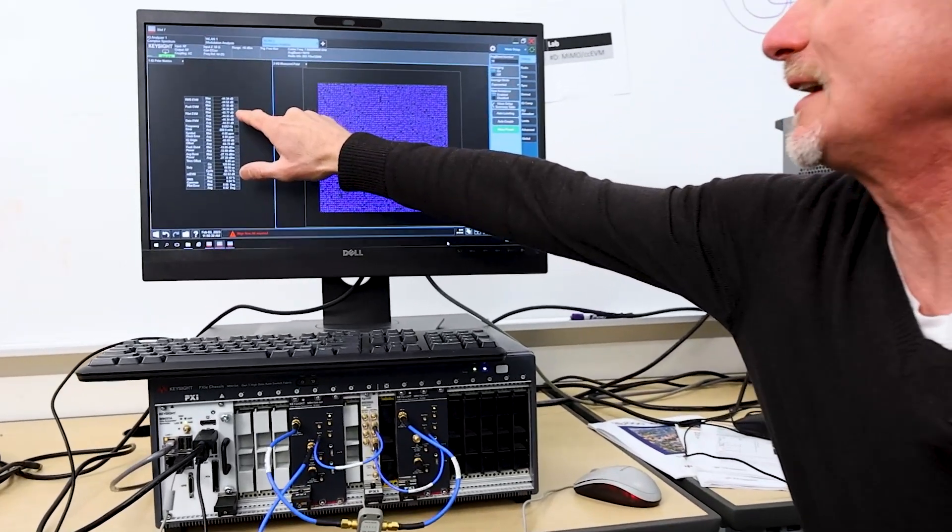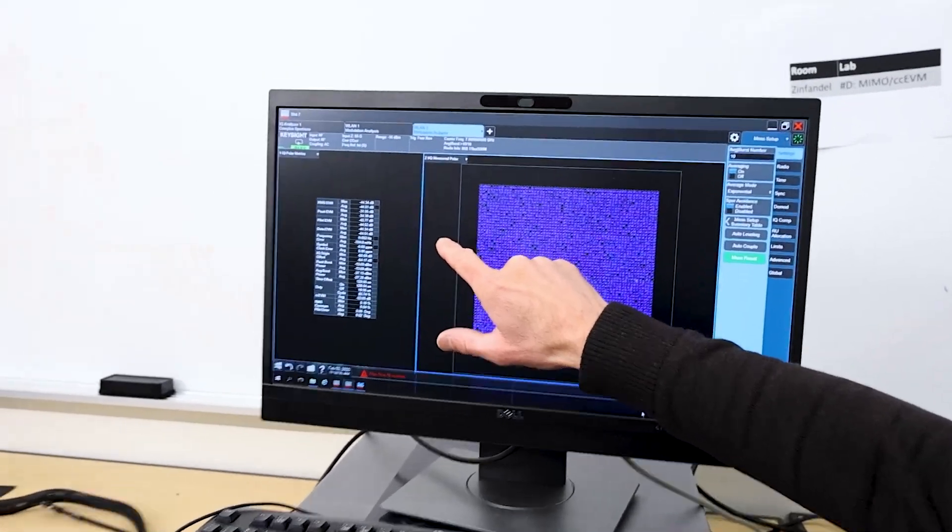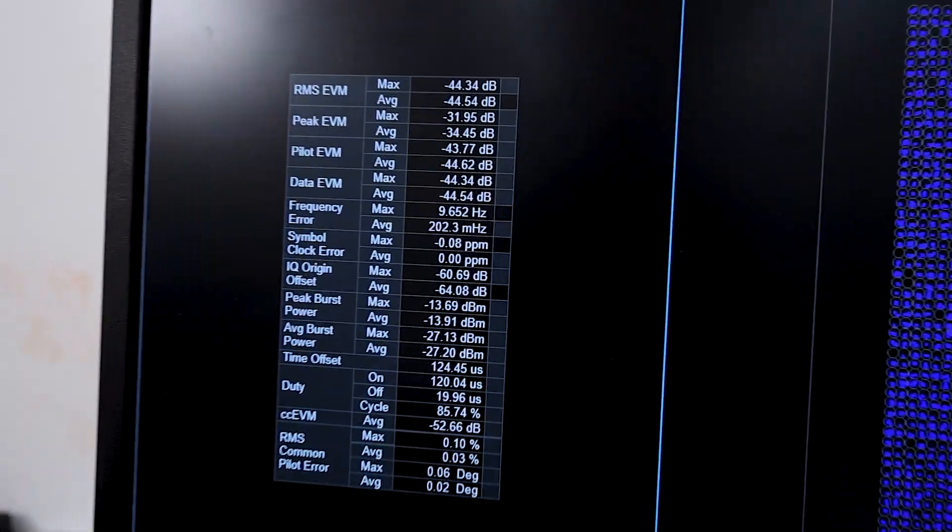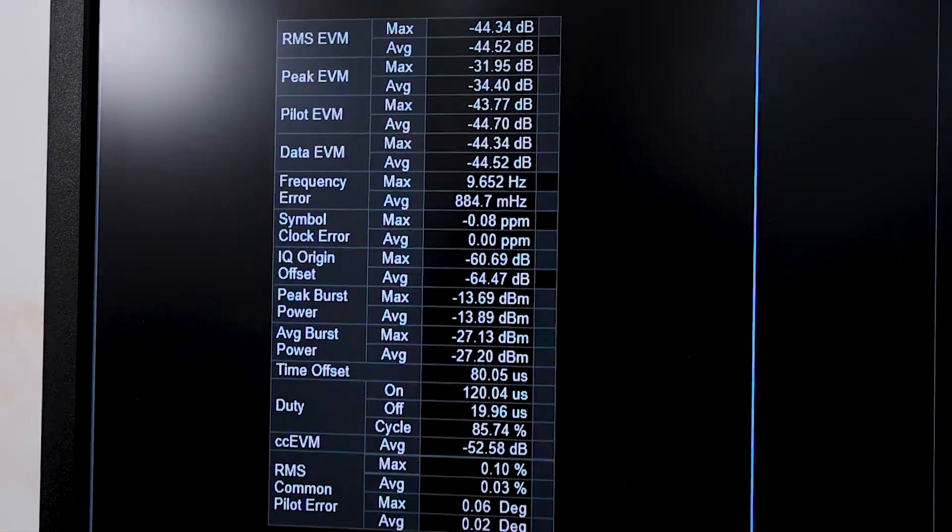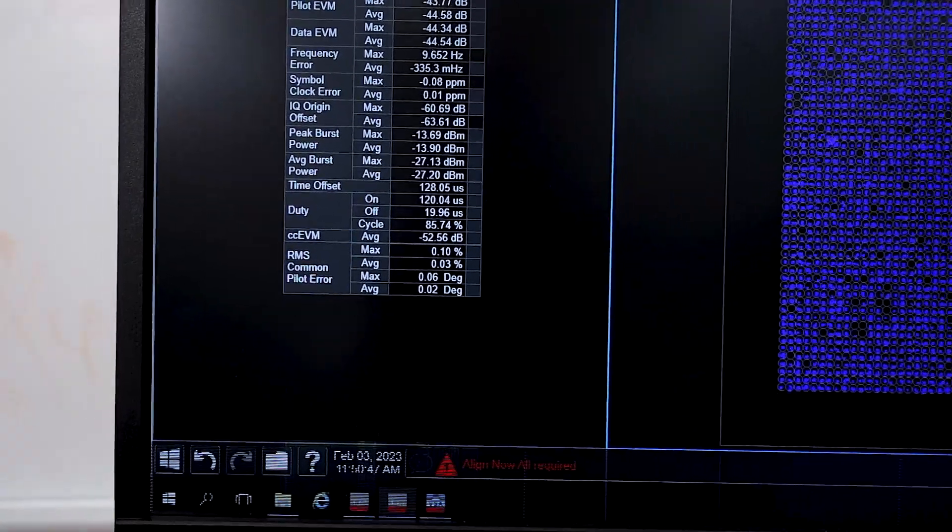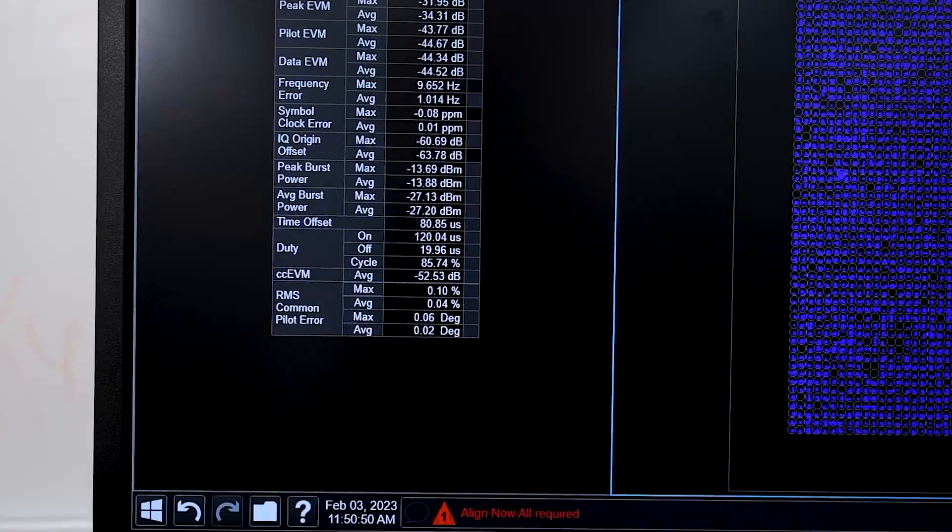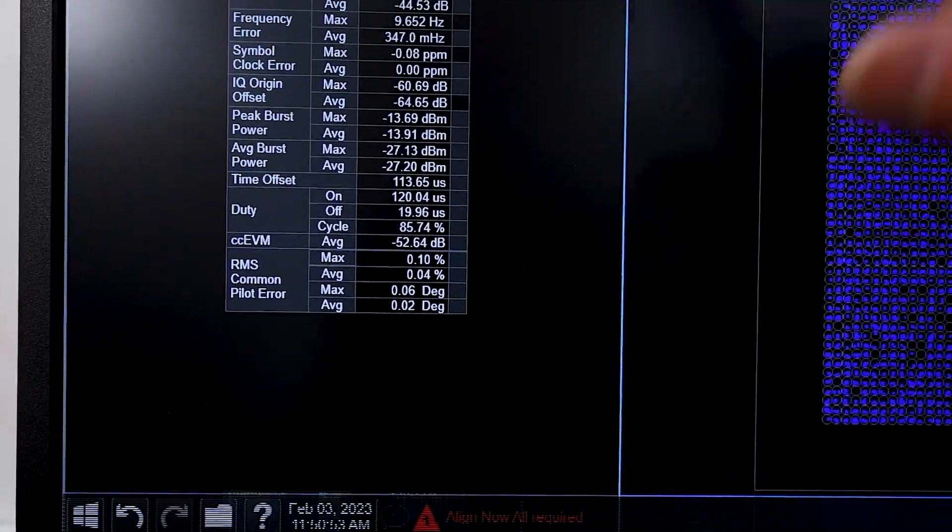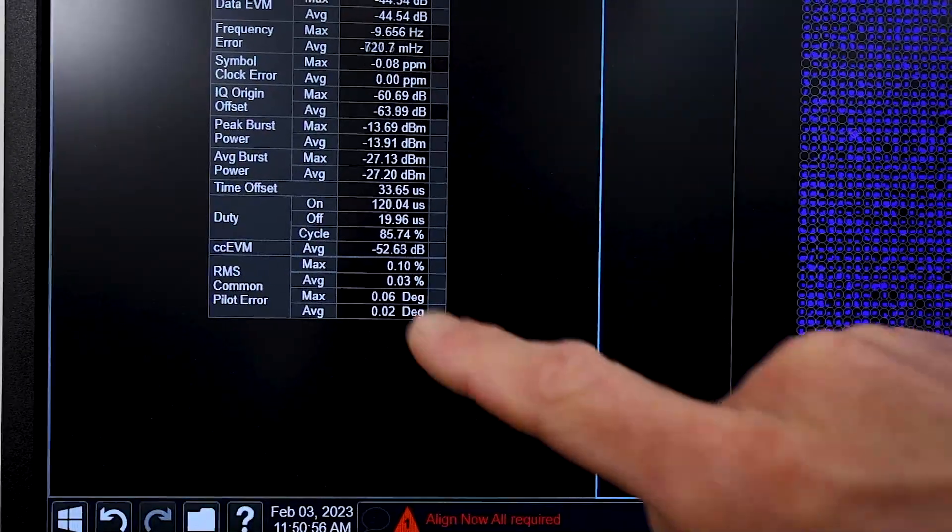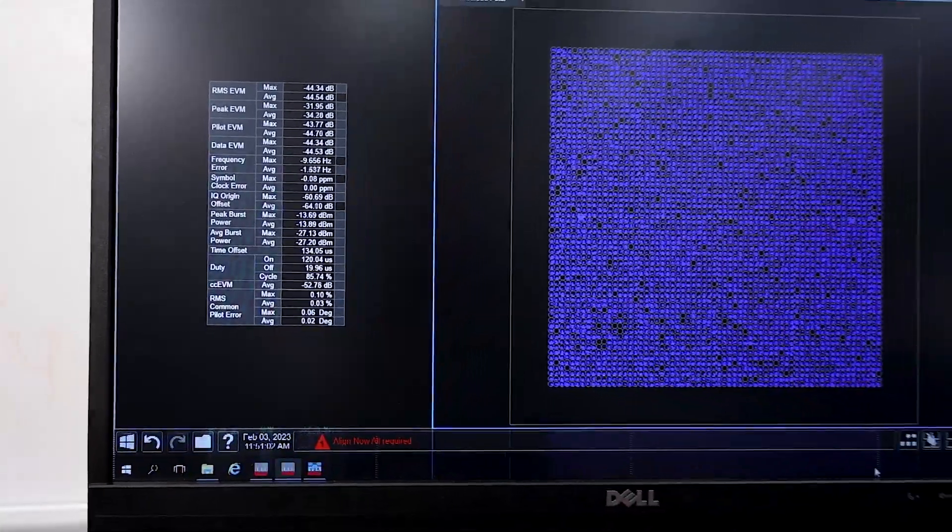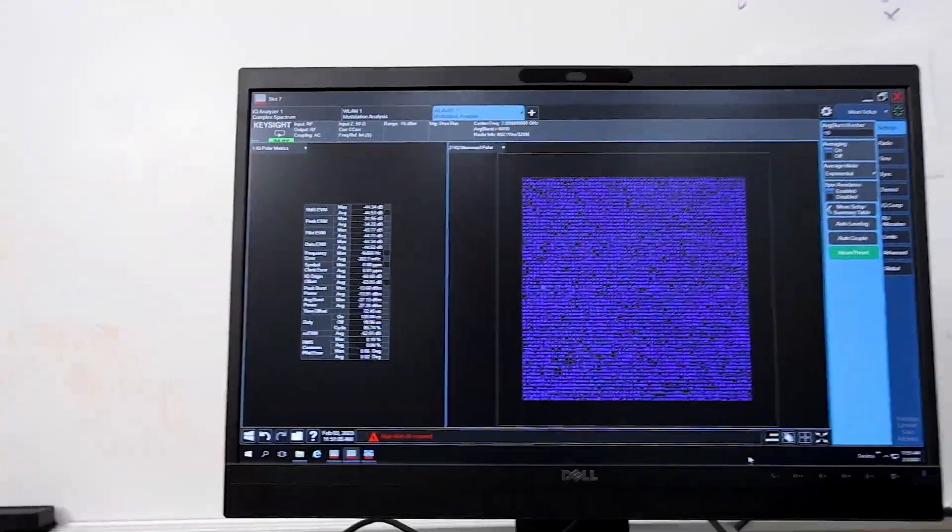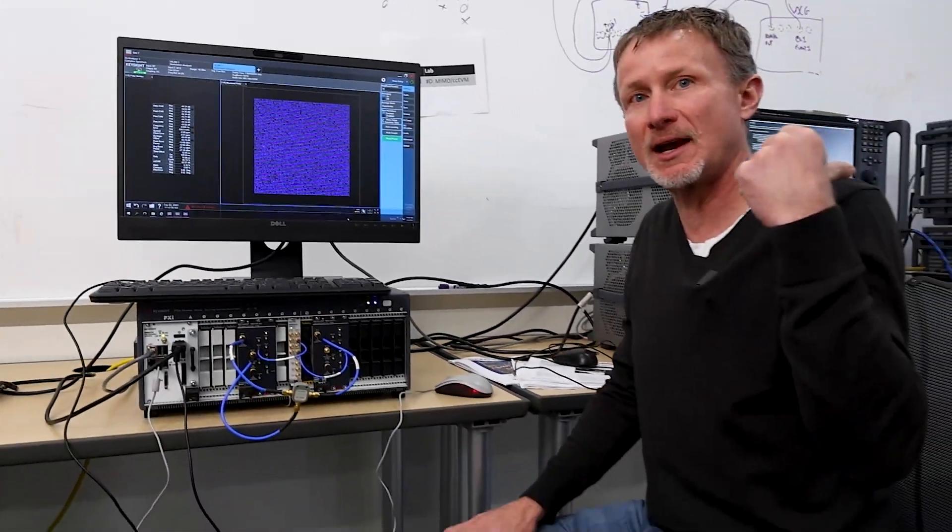So if we look at the single channel EVM, we're measuring right around minus 44 dB. This is artificially a little bit higher than it should be. We should be measuring right around minus 48. The reason for this is we need to do an alignment. That takes about 20 minutes to do and we don't want to take time to do it in this video. However, so we would get minus 48 if we did that. Now we'll look at the cross-correlation EVM and we're measuring right around minus 52 dB, which is about 1 dB worse than we saw with the UXR and the UXA using the VXG. So the VXT source performance is almost as good as the VXG.